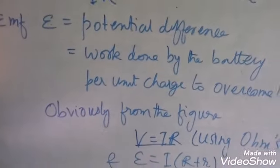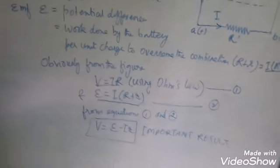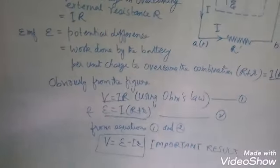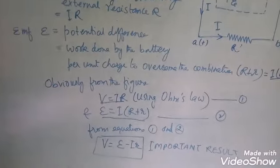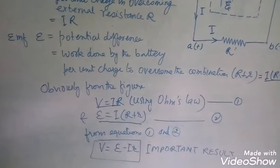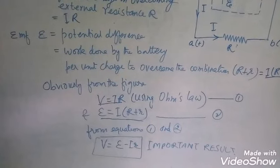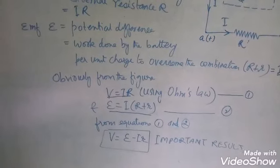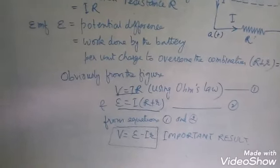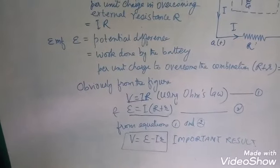The EMF equation gives E equals I times (R plus r). If we eliminate the product I times R from the two equations, we get the final result: V equals E minus Ir. This is an important result, students, and you will see that it finds wide application not only in solving numerical problems but also in other discussions that will follow shortly.